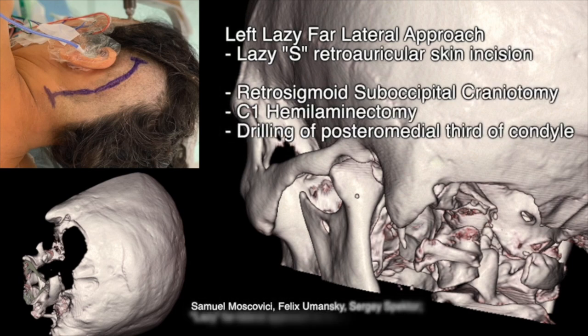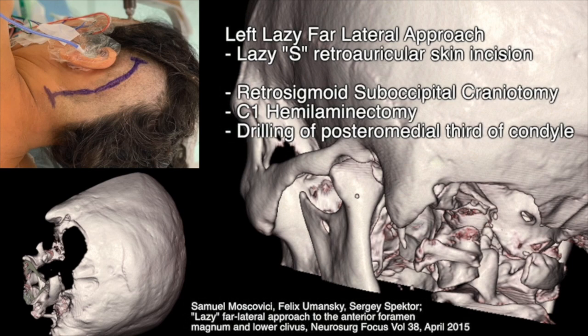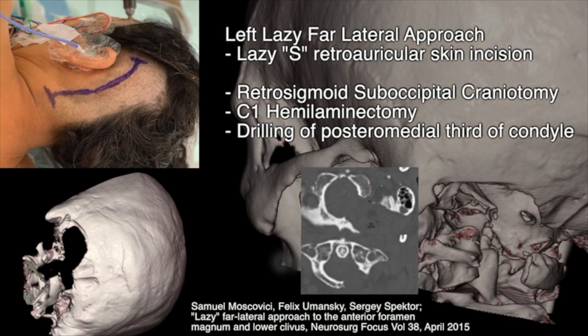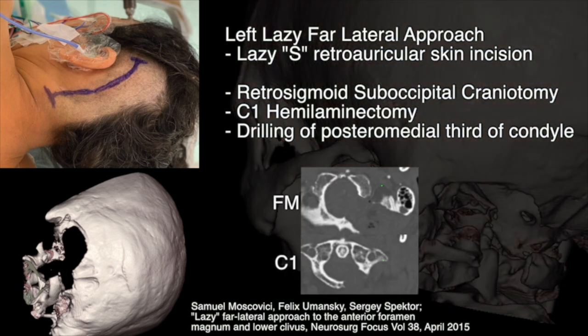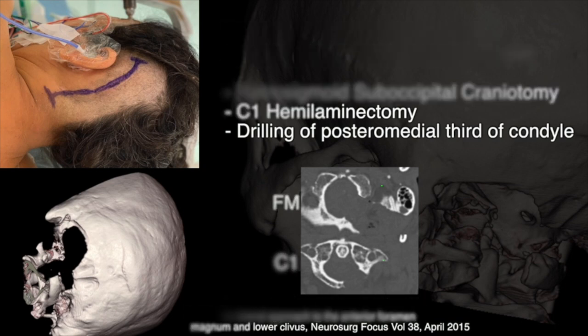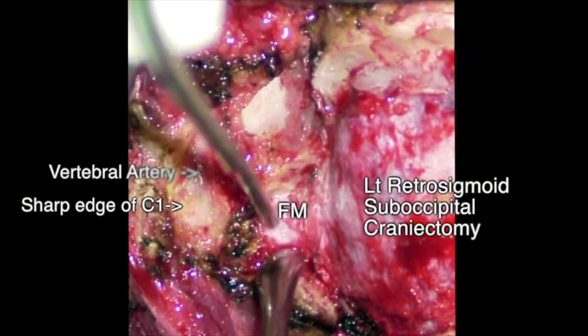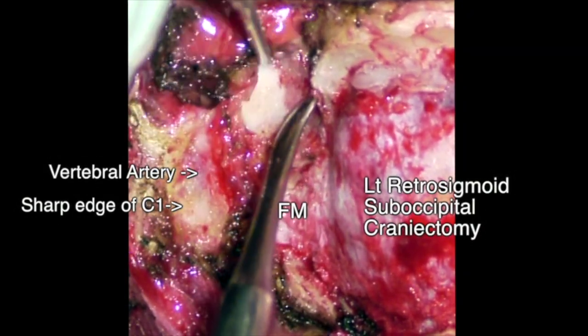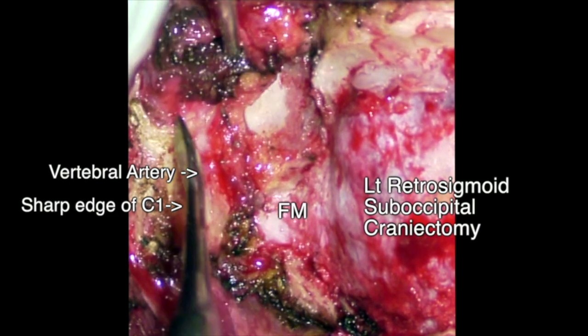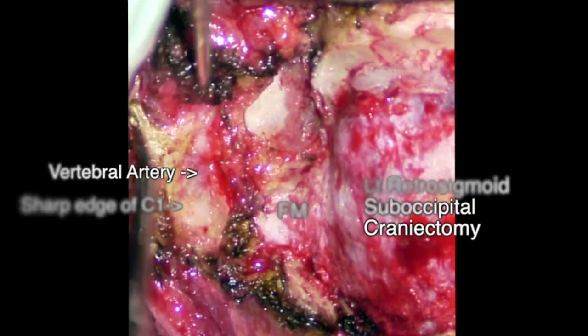We used a previously described modified far-lateral approach that we call the lazy far-lateral approach, through a lazy-S retroauricular skin incision, performing a retrosigmoid suboccipital craniotomy, a C1 hemilaminectomy, and drilling of the posteromedial third of the occipital condyle to obtain good exposure ventral to the medulla. We can appreciate the area of the retrosigmoid suboccipital craniotomy with exposure of the foramen magnum and the posterior arc of C1.